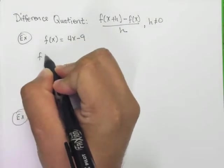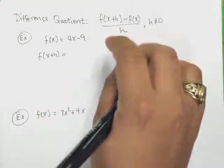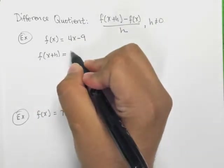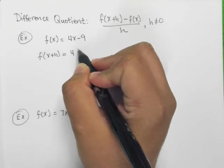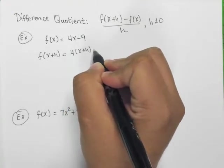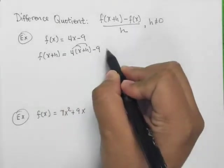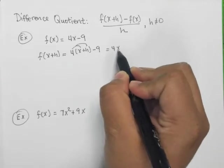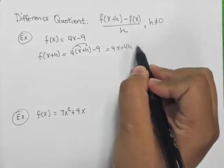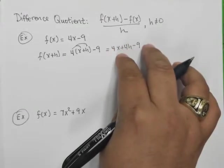The first thing I'm going to do is I'm going to plug in f of x plus h into this original function, and I'm going to figure out what it is that I get. So I have 4 times x plus h, and then minus 9. So I'm going to distribute the 4. I get 4x plus 4h minus 9. So there's no like terms there to combine.